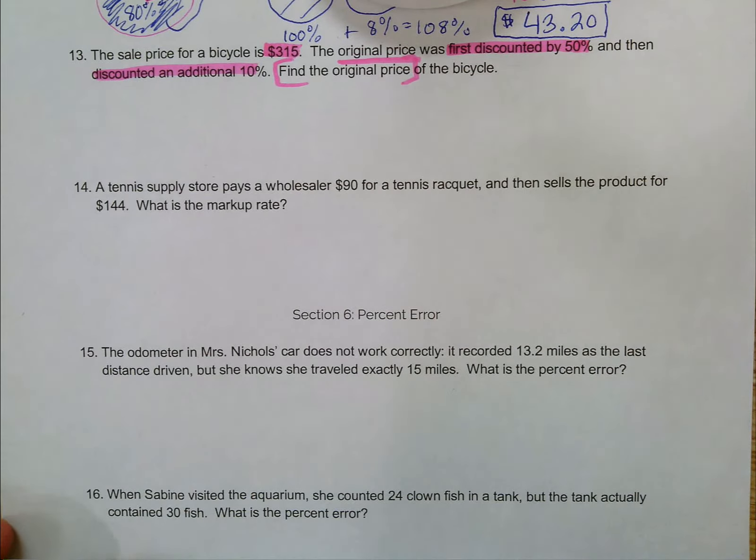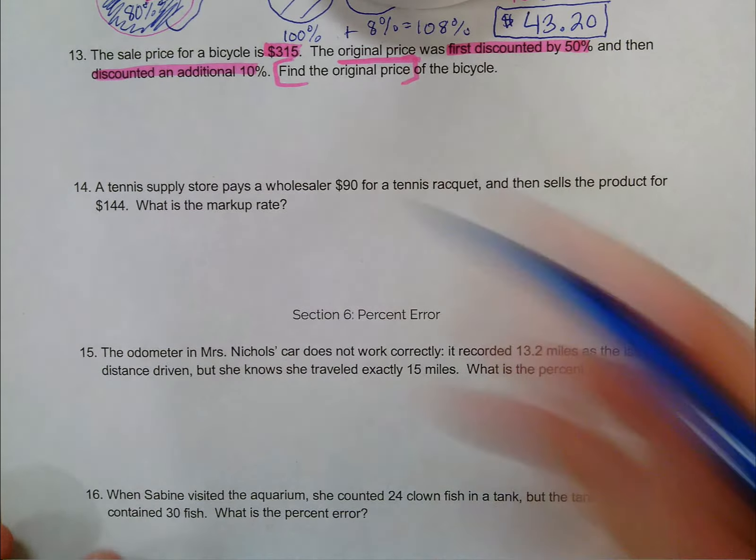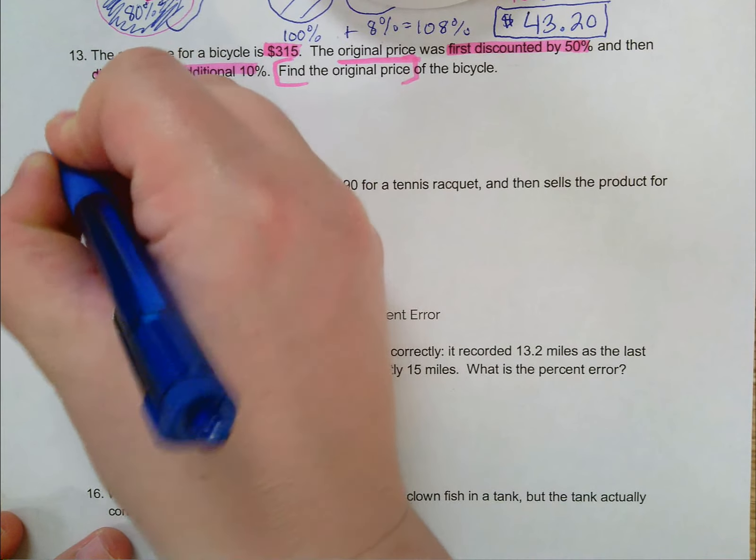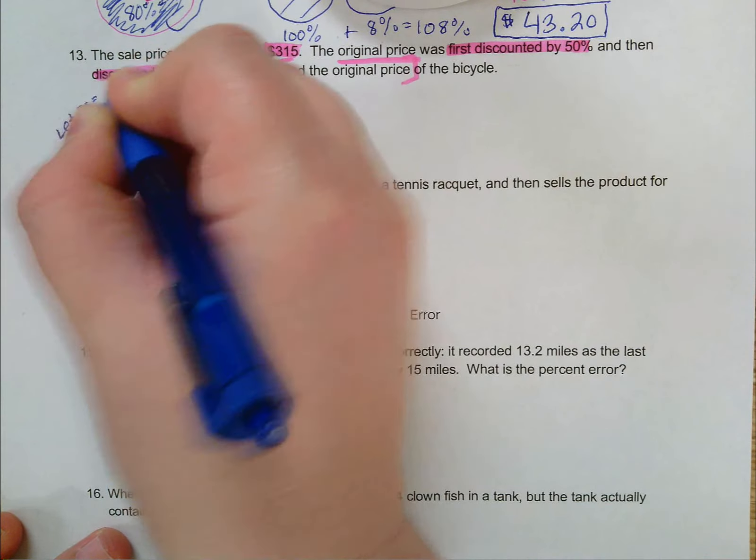So let's diagram what's happening here. It's always a great way to look at things. I don't know my original price, so let's say let X equal my original price.